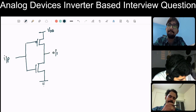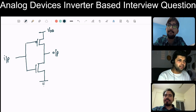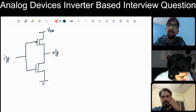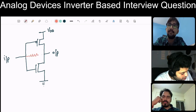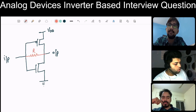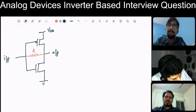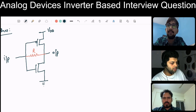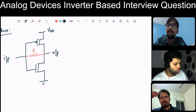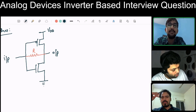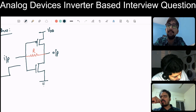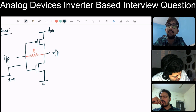The question is: this is a simple inverter, and what they have done specially is put a resistor in between. Now we all know the characteristics of an inverter, but they want to know that if we have added a resistor in between, how will the output behave for a step input? So this is t equal to zero, this is VDD, and this is zero volts.